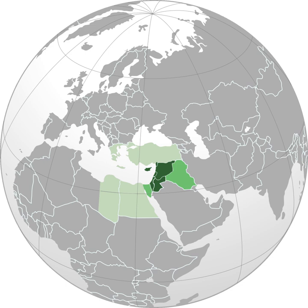The term is also used for modern events. Peoples, states or parts of states in the same region — namely Cyprus, Egypt, Iraq, Israel, Jordan, Lebanon, Palestine, Syria, and Turkey — are sometimes considered Levant countries, comparable with Near East, Middle East, Eastern Mediterranean, and Western Asia.